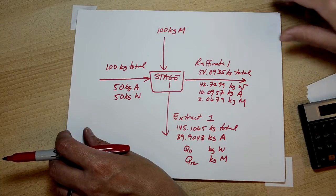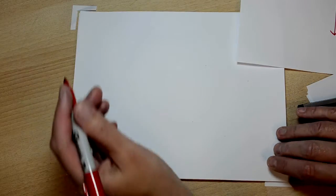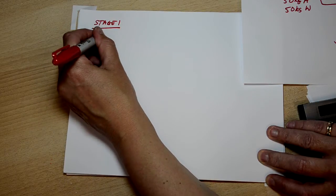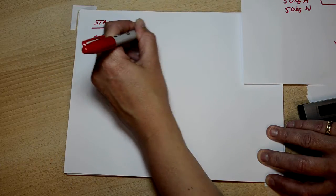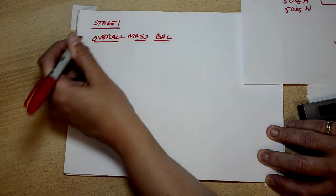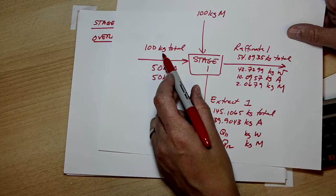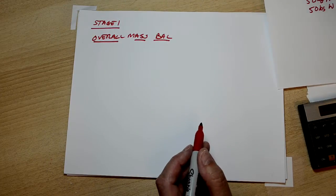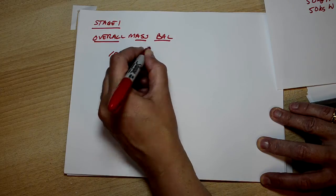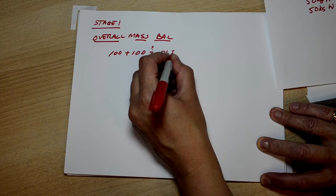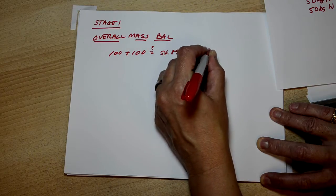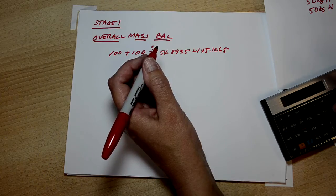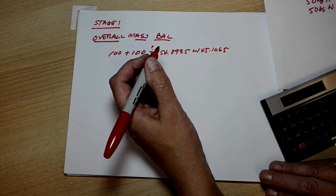So let's start with the overall balance, just to make sure that everything's going fine. So this is stage one. And now I'm going to do the overall balance. So 100 kilograms come in, 100 kilograms come in, 54.89 come out, 145.10 come out. So 100 plus 100 equals 54.8935 plus 145.1065, and yes, it checks.